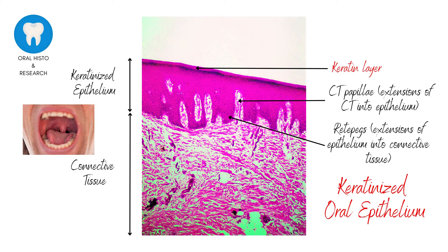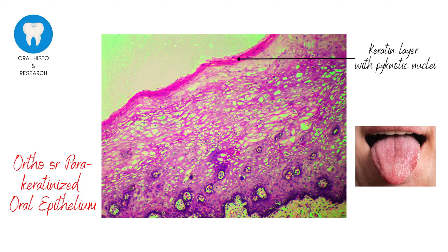The next type of epithelium is called ortho- or parakeratinized epithelium. This epithelium is again part of the masticatory mucosa found on the dorsal surface of the tongue. Histologically, it is described by a distinctive keratin layer with retained nuclei at the uppermost surface.